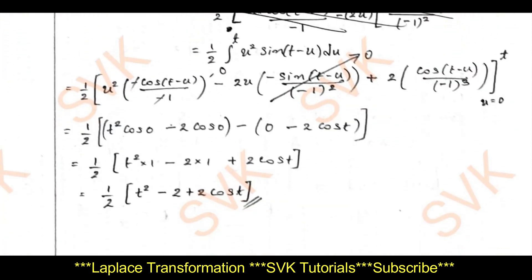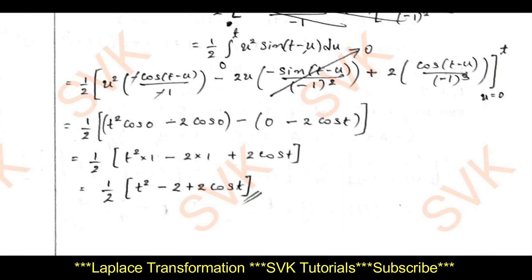Applying integration by parts to (1/2)∫₀ᵗ u²·sin(t−u) du: retain u², integrate sin(t−u) to get −cos(t−u)·(−1) = cos(t−u) (since d(t−u)/du = −1). Differentiating u² gives 2u, and integrating cos(t−u) gives −sin(t−u)·(−1). Differentiating 2u gives 2, and integrating −sin(t−u) gives cos(t−u)/(−1)³.